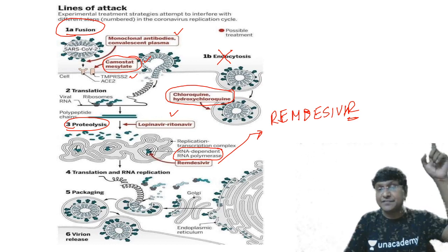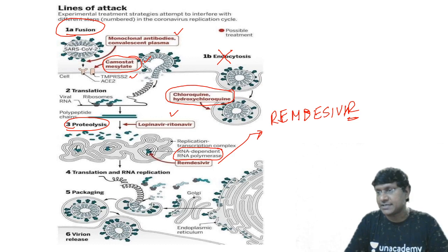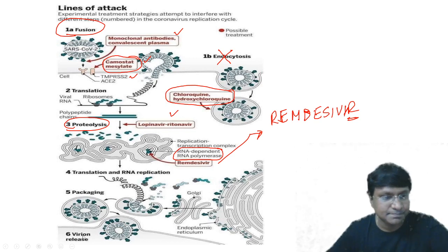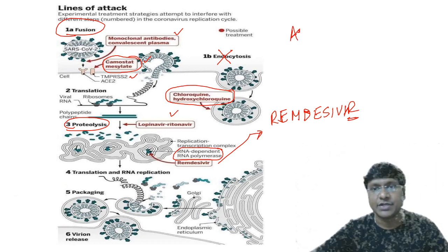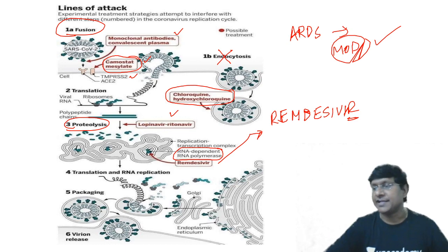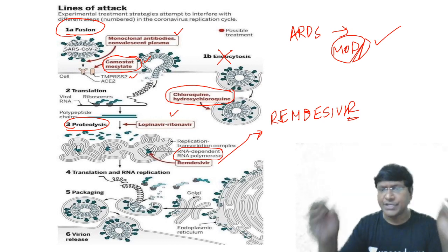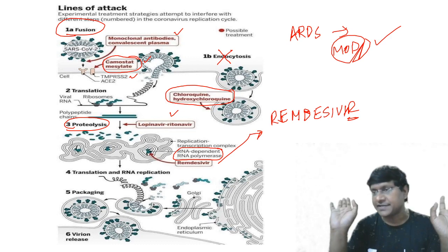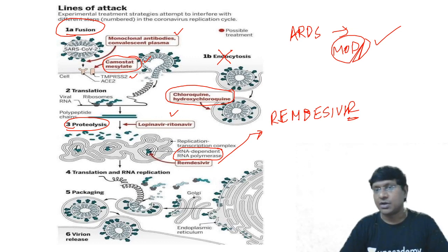This completes the image-based discussion from COVID-19 structure all the way through to treatment. The cause of death in COVID-19 is ARDS — acute respiratory distress syndrome — which causes multi-organ dysfunction and finally death. Everything can be explained through ARDS, as all structures get affected due to hypoxia.